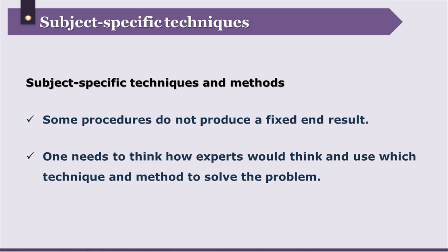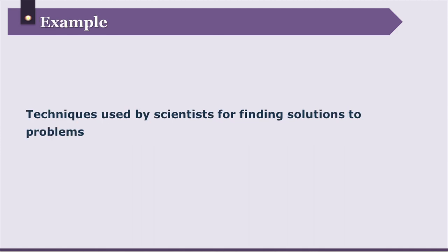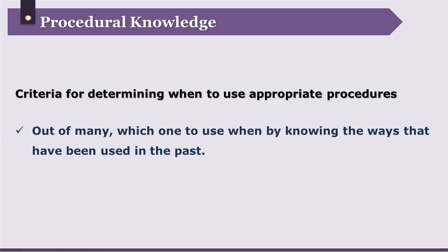The next category is subject-specific techniques and methods. Some procedures don't produce a fixed end result — one needs to think about how experts would think and which technique and method to use to solve the problem. For example, techniques used by scientists for finding solutions to problems. The next category is criteria for determining when to use appropriate procedures. Deciding which procedure to use according to the problem that is faced by the learner falls in this category, generally based on how these procedures were conducted in the past and the kind of results they have given. The first two categories relate to skills, algorithms, techniques, and methods, whereas the last subtype prepares the learner to decide which skill, method, or technique is most appropriate for the given problem.